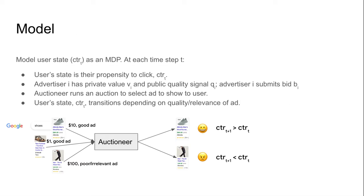Our model assumes access to a user state modeled as an MDP. At each time t, the user state corresponds to their propensity to click. An advertiser comes with some private value vi and public quality signal qi, then submits a bid. The auctioneer runs an auction to select an ad, and the user state — the propensity to click — transitions depending on the quality and relevance of the shown ad. The goal is to design an auction that maximizes long-term revenue.